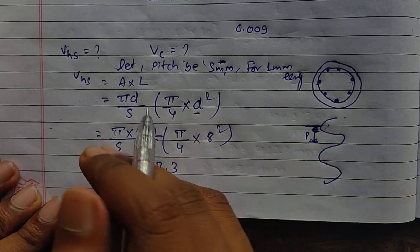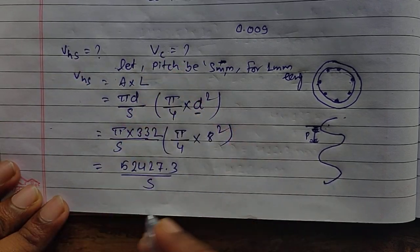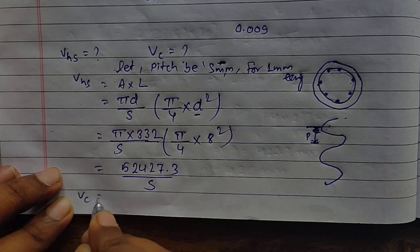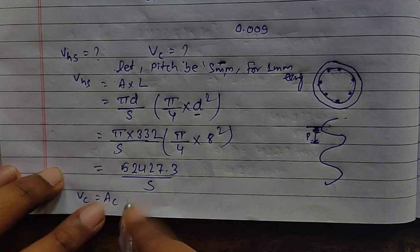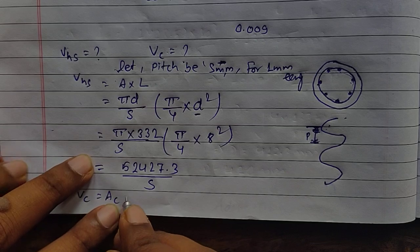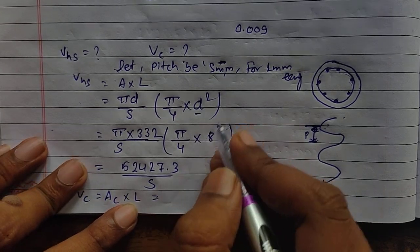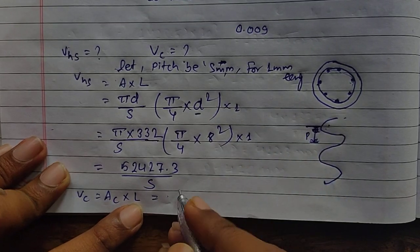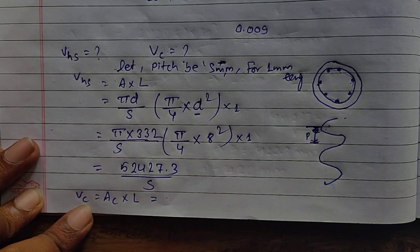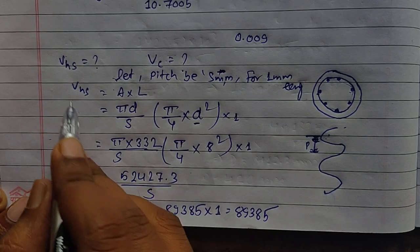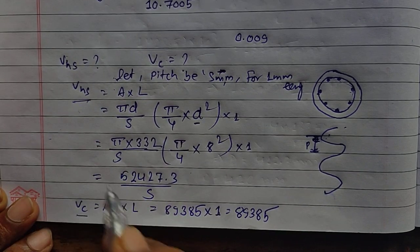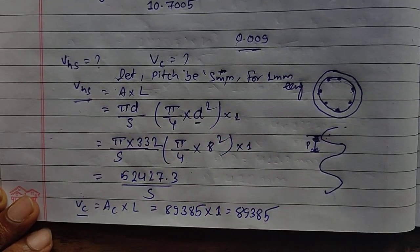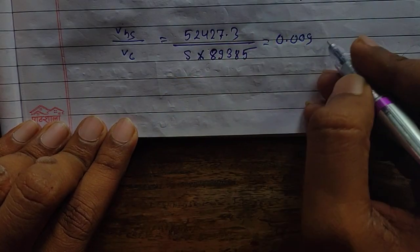The volume of core per mm length = area of core × length = AC × 1. We have already calculated AC previously. Now we equate both VH/VC values using the condition from clause 39.4.1, substituting all known values and solving for S.